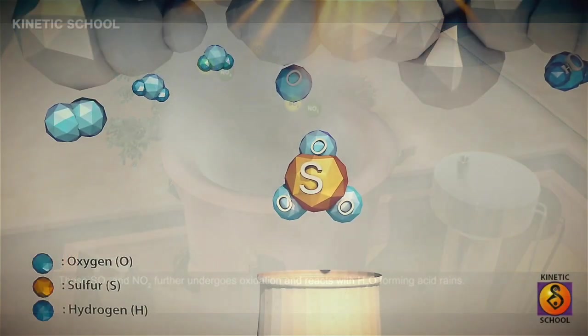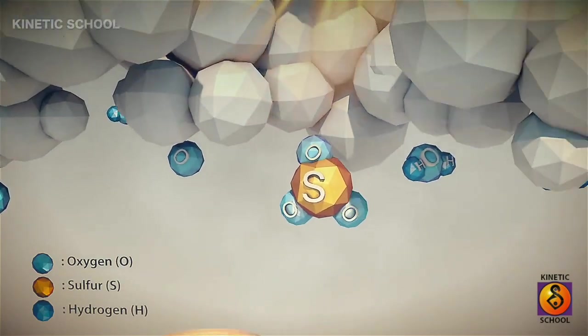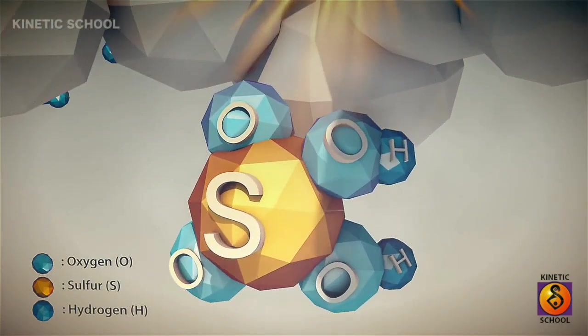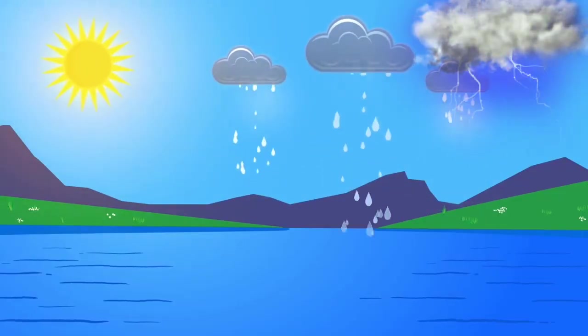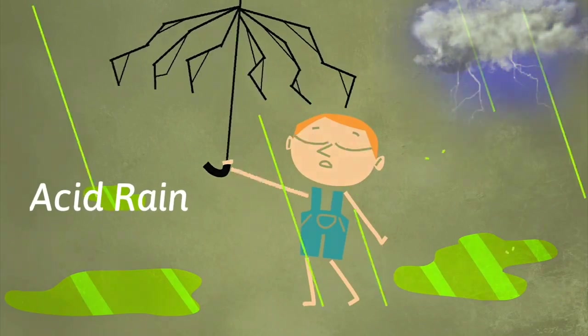Some of these gases, especially nitrogen oxide and sulfur oxide, react with tiny droplets of water in clouds to form sulfuric and nitric acids. The rain from these clouds then falls as very weak acid, which is why it is known as acid rain.